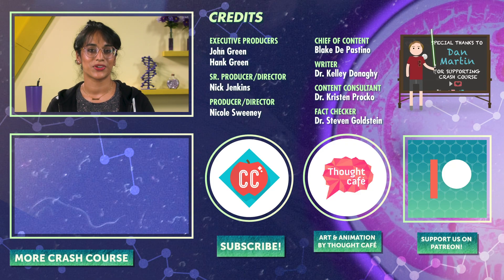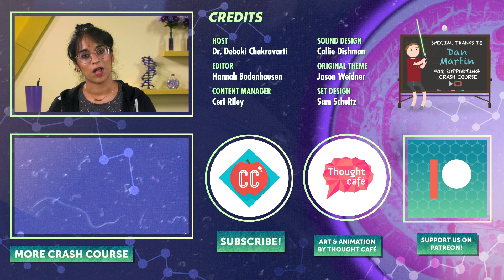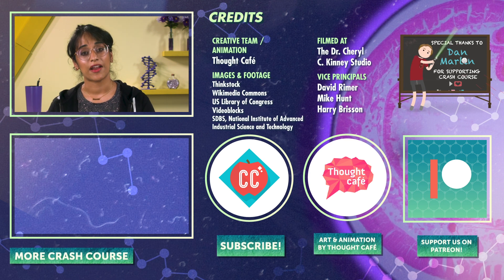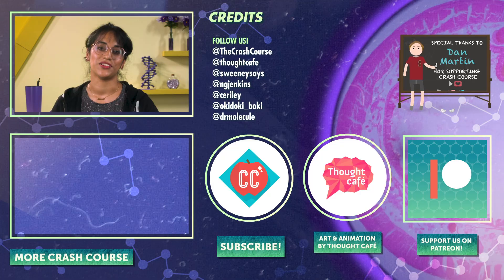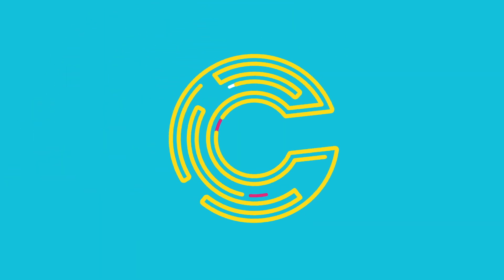Next time, we'll combine electron-pushing with acid-base chemistry and learn what resonance structures can tell us about the strengths of organic acids and bases. Thanks for watching this episode of Crash Course Organic Chemistry. If you want to help keep all Crash Course free for everybody, forever, you can join our community on Patreon.